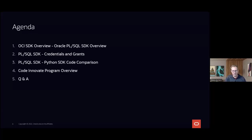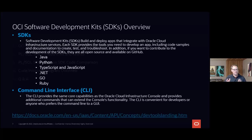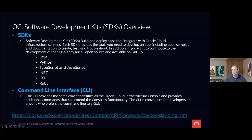Lastly, I'll hand it over to Tom who will give a quick overview of the Code Innovate program. As a reminder, Oracle Cloud Infrastructure has several SDKs available to build and develop applications, including Java, Python, TypeScript, .NET, Go, and Ruby. We also can't mention SDKs without mentioning the CLI, which goes hand-in-hand with the Python SDK.